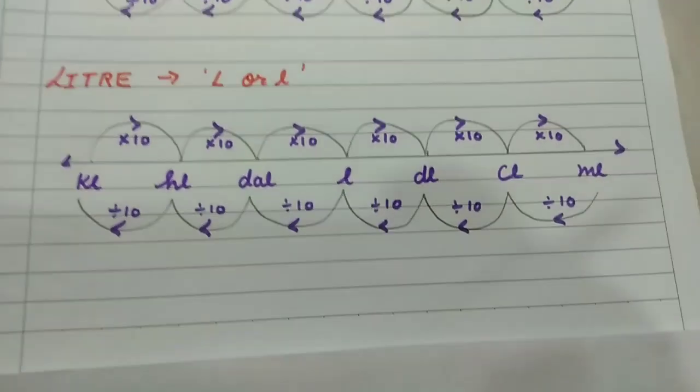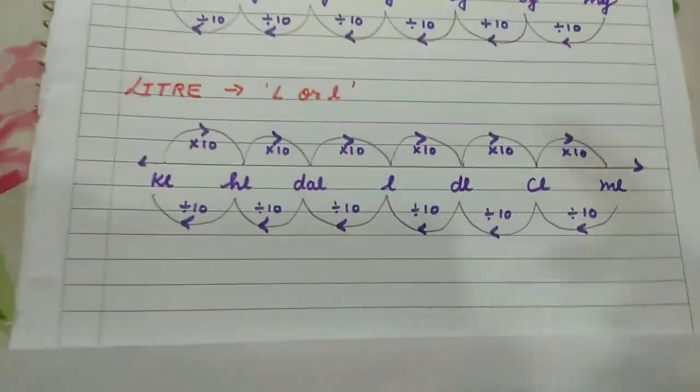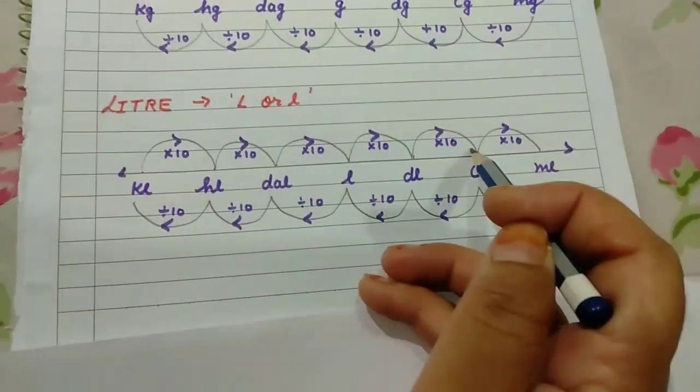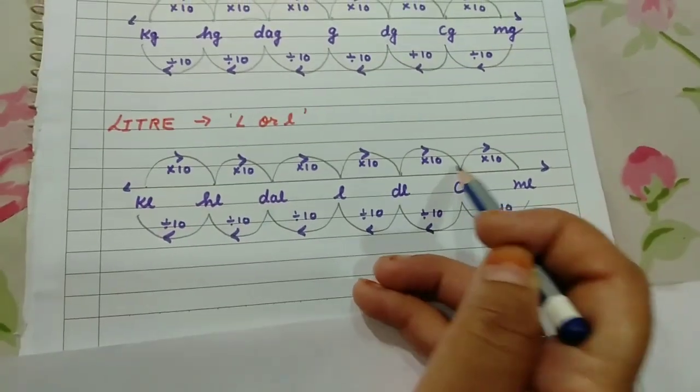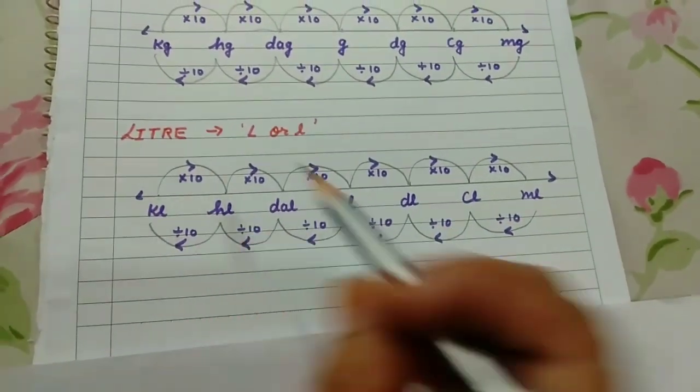So when you have to convert from smaller to larger, you divide by 10. Then you have to follow this in liters too. Bye bye.